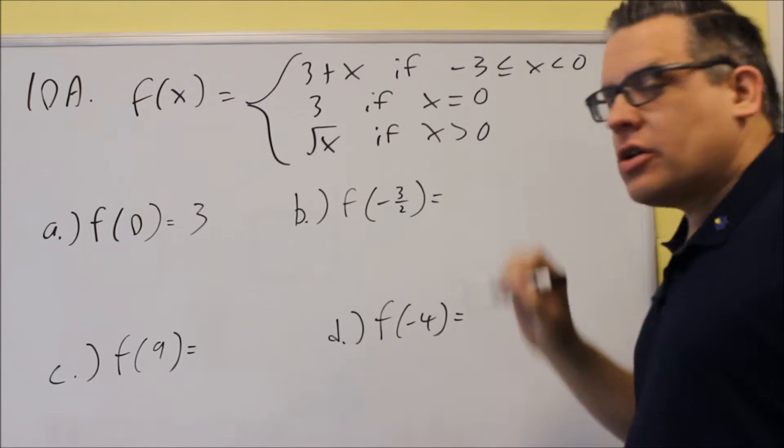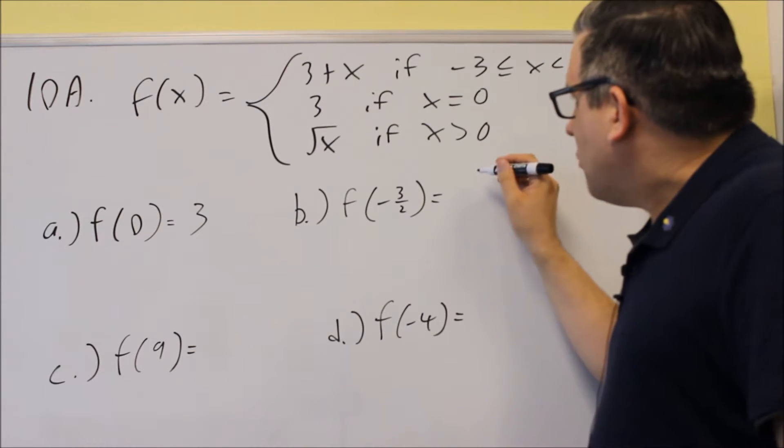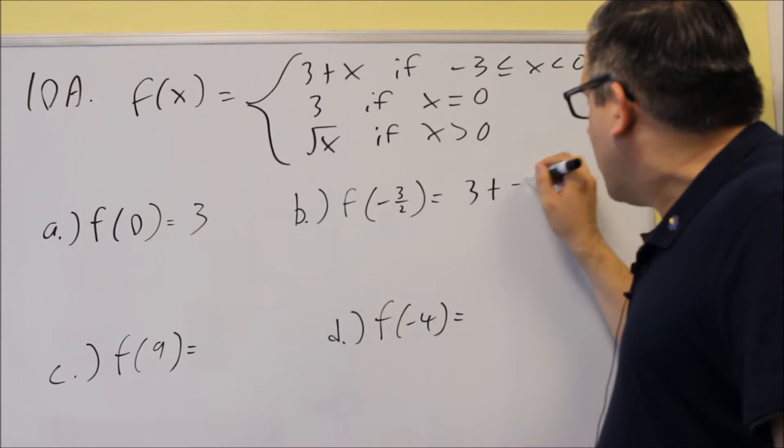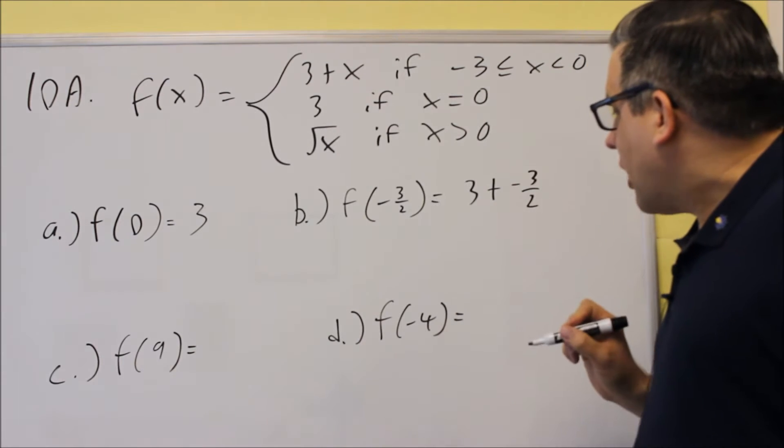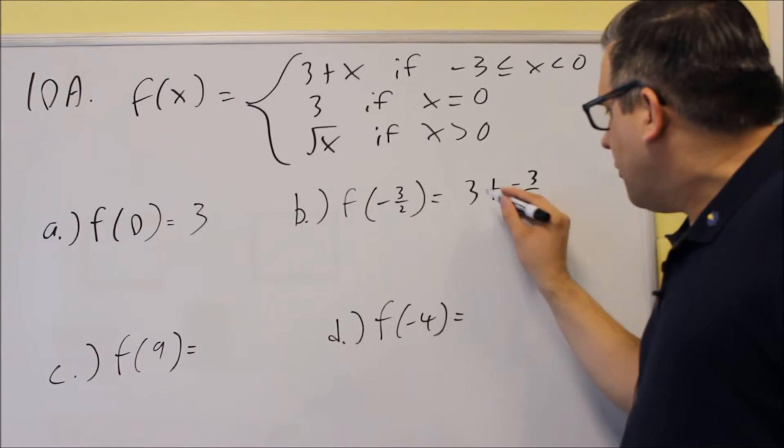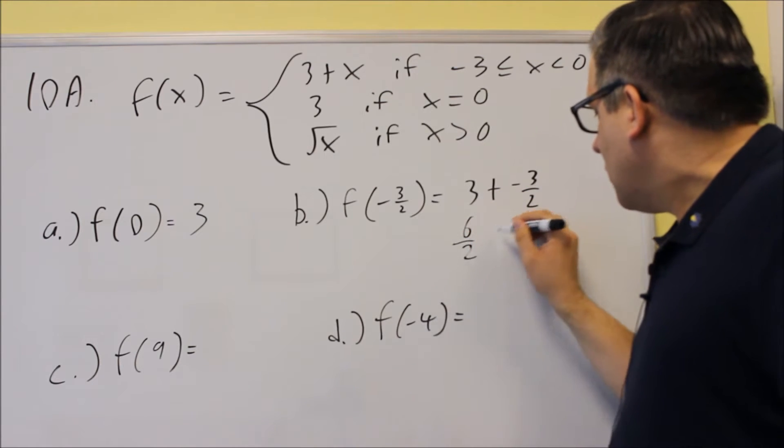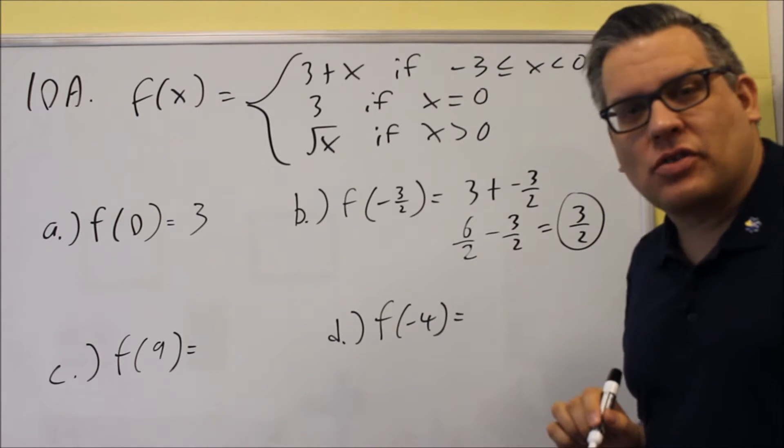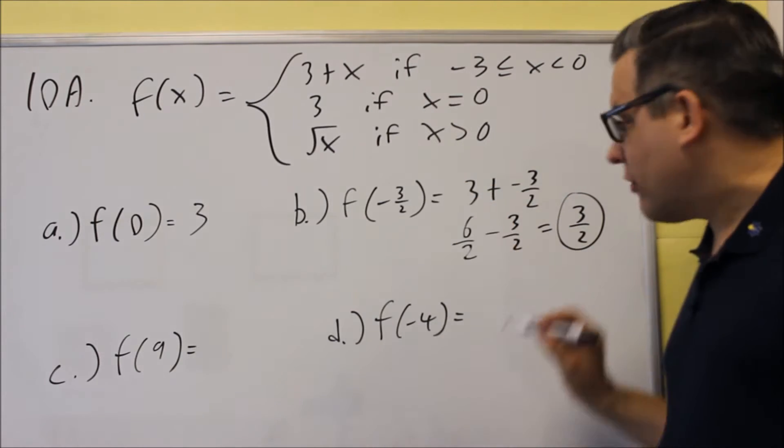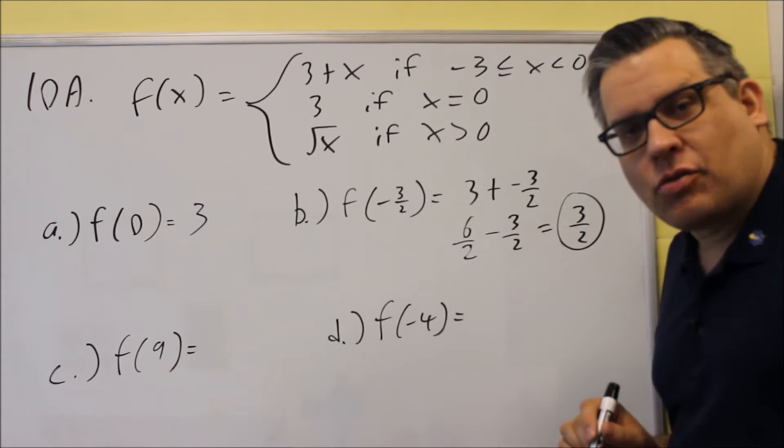So negative 3 halves would only belong to the top one. So I'm going to do 3 plus x. So 3 plus negative 3 halves. So I'm subtracting that. So I'm going to do 6 halves. And that would be minus 3 halves. And then you get 3 halves as the answer. So f of negative 3 halves, you'll get positive 3 halves.